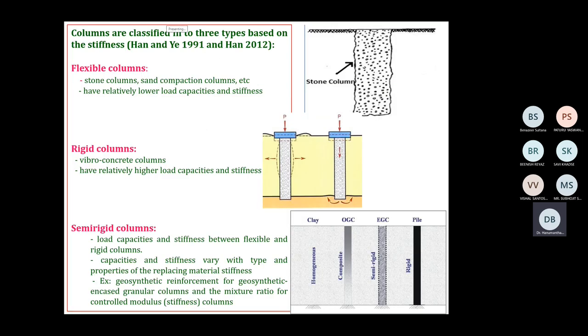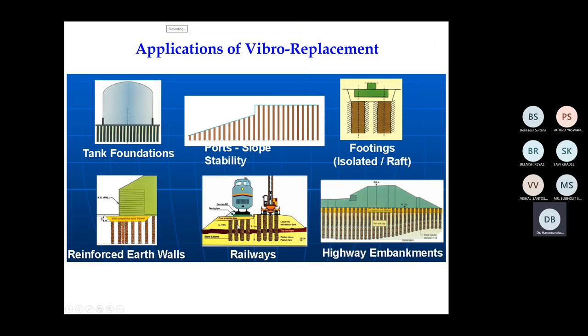There are three different types of stone columns. Flexible columns are simple stone columns; rigid columns are concrete columns; semi-rigid columns are encased stone columns. These are a few exemplary situations where the stone column technique is prevalently used.